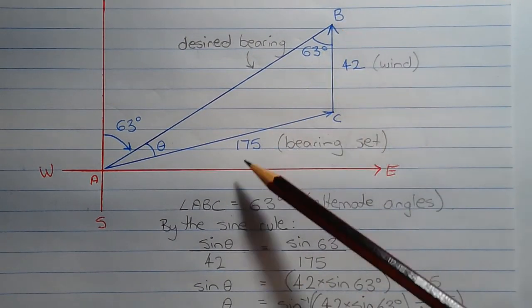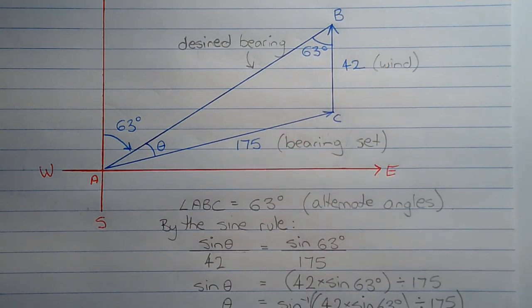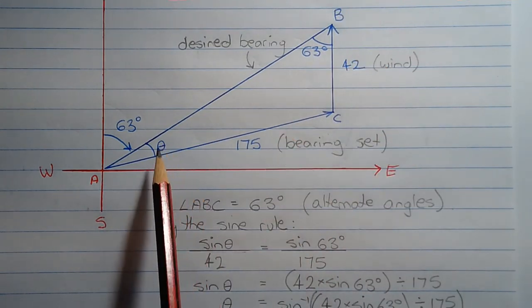Now we have a known side angle pair. So AC is opposite angle ABC. So we can apply the sine rule to find angle theta.